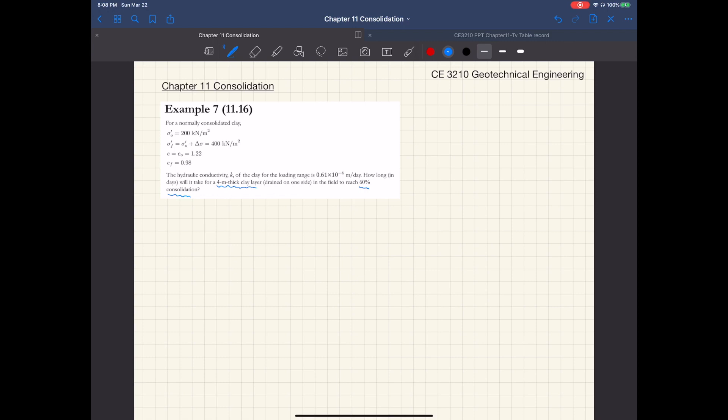In the sense that you are given the average degree of consolidation U, from which you can get T sub V from table 11.7, and then you can calculate the time T.